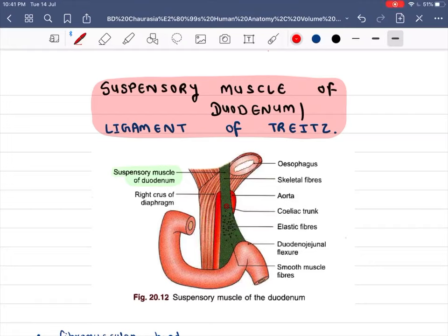So now we will study the suspensory muscle of duodenum, or most likely ligament of Treitz. So this is our suspensory muscle of duodenum. Now we will see what it is.